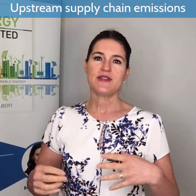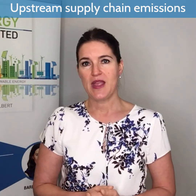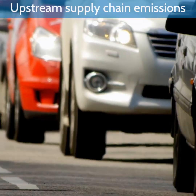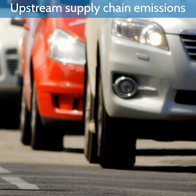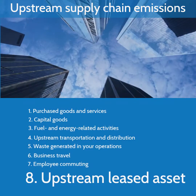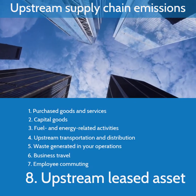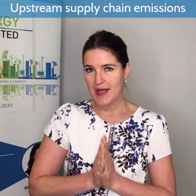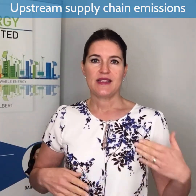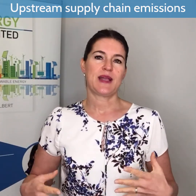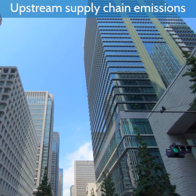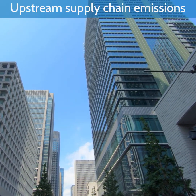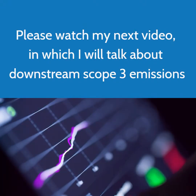Category seven is employee commuting. This accounts for travel between your staff's homes and your business. Category eight is upstream leased assets. This emission source comes from assets that you rent, that are not already included in your scope one and scope two inventory.